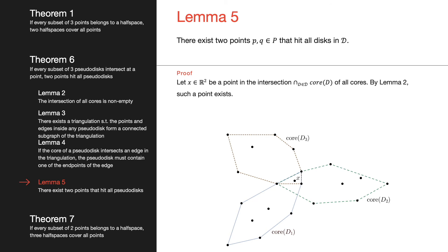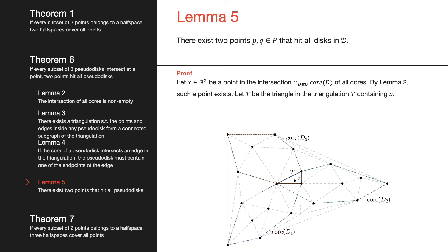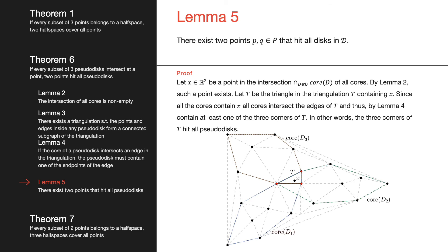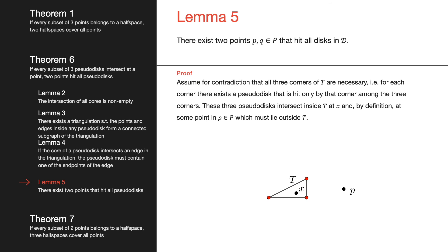Lemma 5: there exist two points in our point set that hit all pseudodisks. Proof: by Lemma 2, the intersection of all cores is non-empty. Let x be a point in this intersection. The point x must be contained in some triangle in our triangulation. Since every core contains x, every core must intersect one of the edges of our selected triangle. By Lemma 4, every core must contain at least one of the endpoints of the triangle, which means the three corners of the triangle hit all pseudodisks.